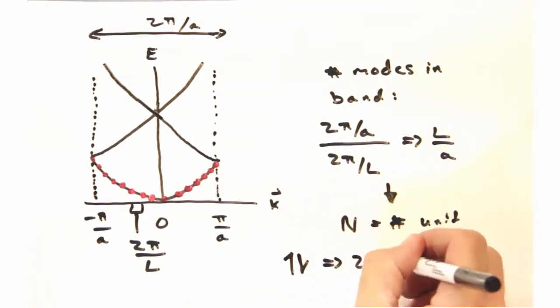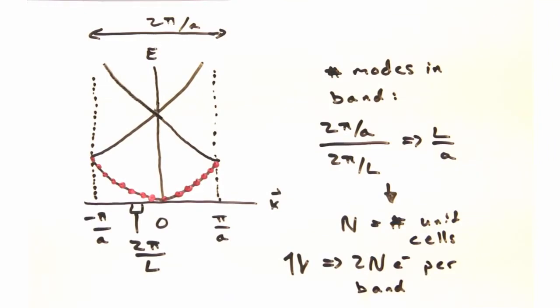Yep. How many electrons can the band hold, then? 2N, since we can put a spin-up and a spin-down electron in each mode. And depending on how filled these bands are, and how they're arranged, we can get four different types of materials.